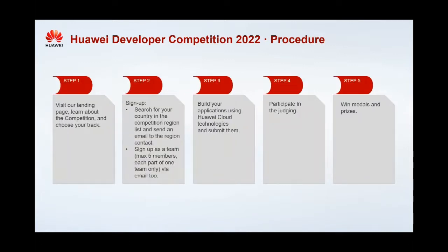Here is some information about the procedure that can help you. Step 1: visit our landing page and learn about the competition and choose your track. Step 2: sign up — search for your country in the competition region list and send an email to the regional contact. Sign up as a team via email. Step 3: build your application using Huawei Cloud technologies and submit them.